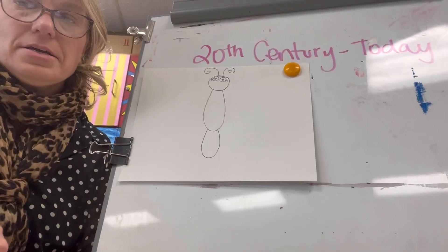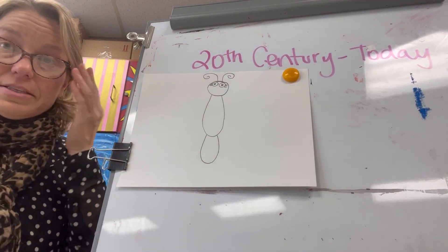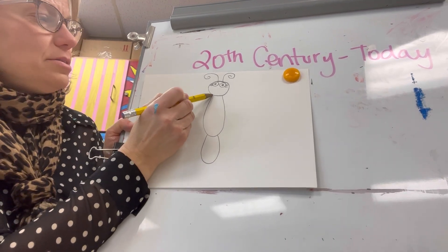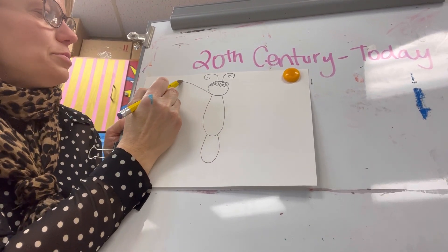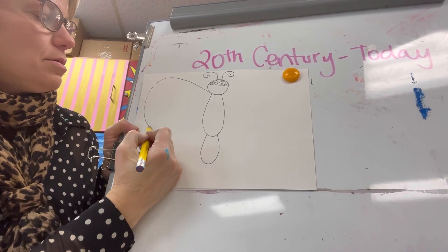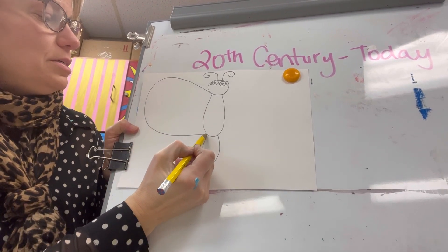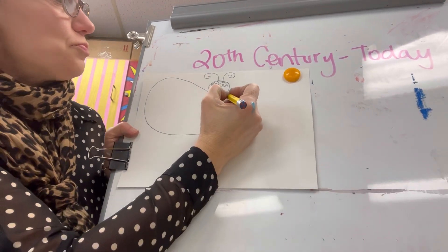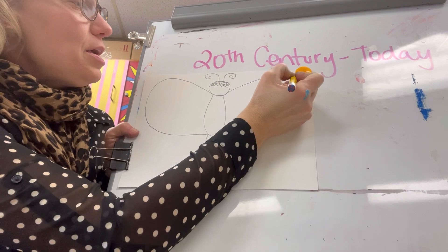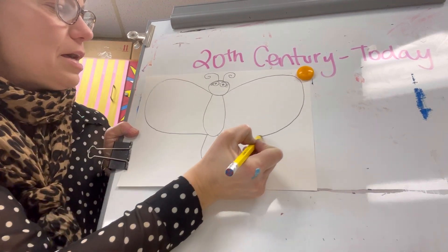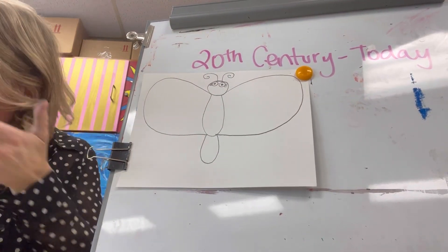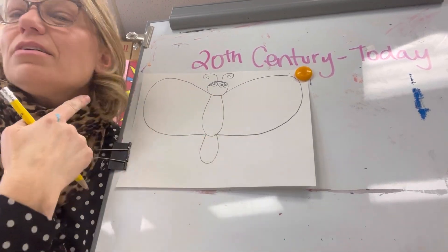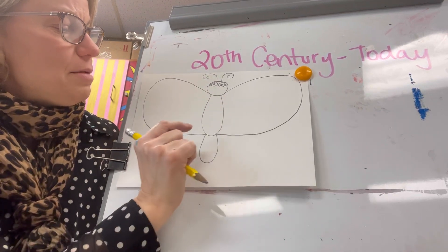Next we're going to make two sets of wings. From where this circle ends and this line begins, we're going to make a big wing that ends where this section meets. We're going to try our best to do the same wing size on the other side — two wings.